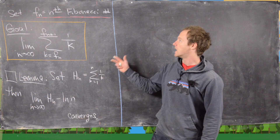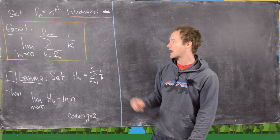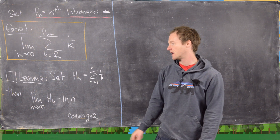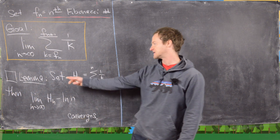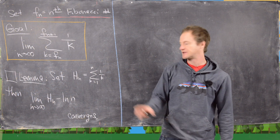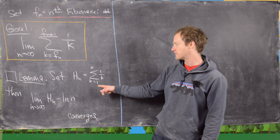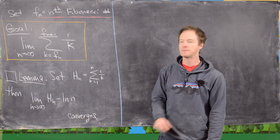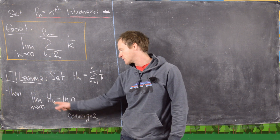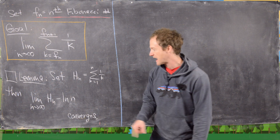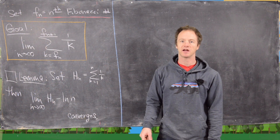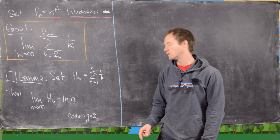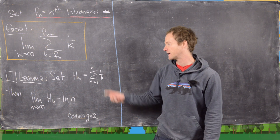In order to find out what this limit is, we need the following pretty classic result: if you set H_n equal to the harmonic number — that's just the sum from k equals 1 to n of 1 over k — then the limit as n goes to infinity of H_n minus log(n) converges, and it actually converges to a well-known constant which we'll talk about later.